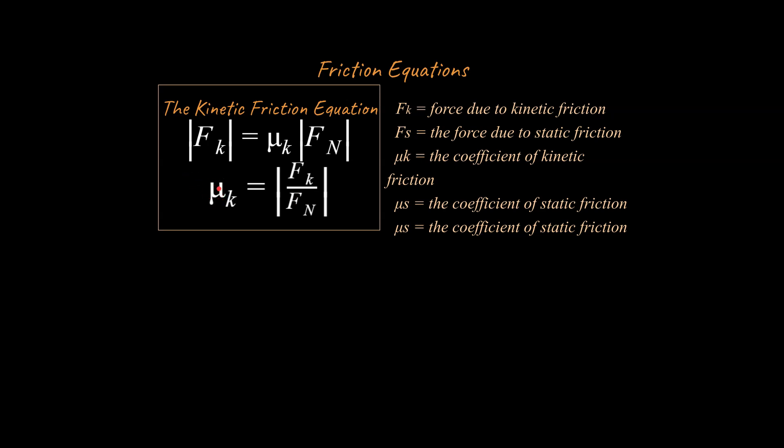So that kind of gives you an idea what the coefficient of kinetic friction is. Let me put it this way. If this is a higher number, then that would be something like two surfaces that don't move past each other very well. Like apparently rubber and concrete. If you put them next to each other, they're really hard to move.